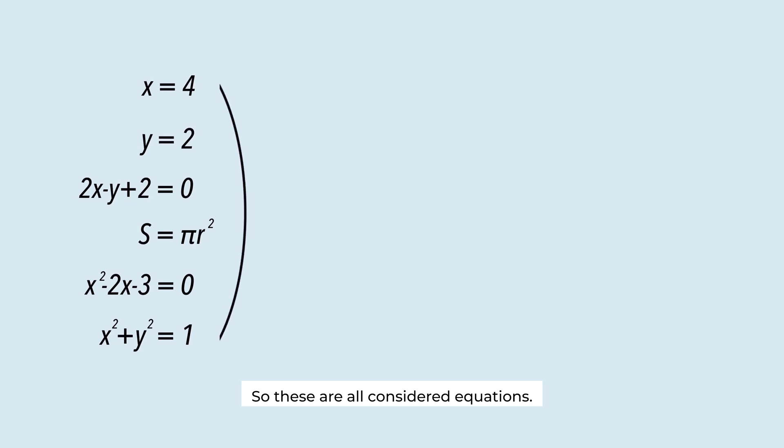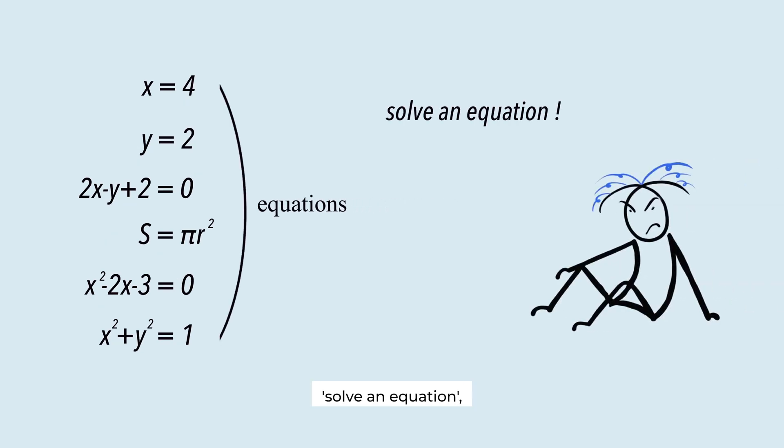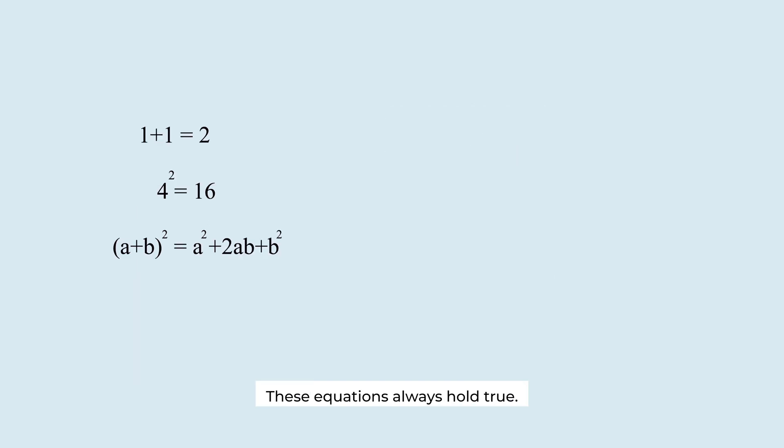So these are all considered equations. But when we say solve an equation, we are dealing with a narrow definition. These equations always hold true. 1 plus 1 is always true. This formula is always the same as this formula. This type of equation is called an identity.